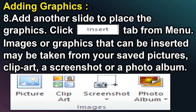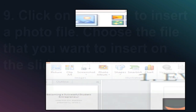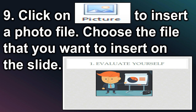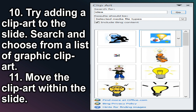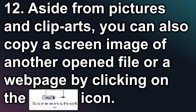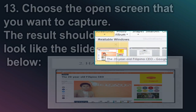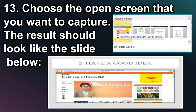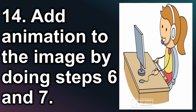Adding Graphics: Add another slide for graphics. Click the Insert tab from the menu. Images or graphics that can be inserted may be taken from your saved pictures, clip art, a screenshot, or a photo album. Click on Picture to insert a photo file and choose the file you want to insert. Try adding a clip art to the slide — search and choose from a list of graphic clip art, then move the clip art within the slide. Aside from pictures and clip arts, you can also copy a screen image of another opened file or a web page by clicking on the screenshot icon. Choose the open screen that you want to capture. Add animation to the image by doing steps 6 and 7.